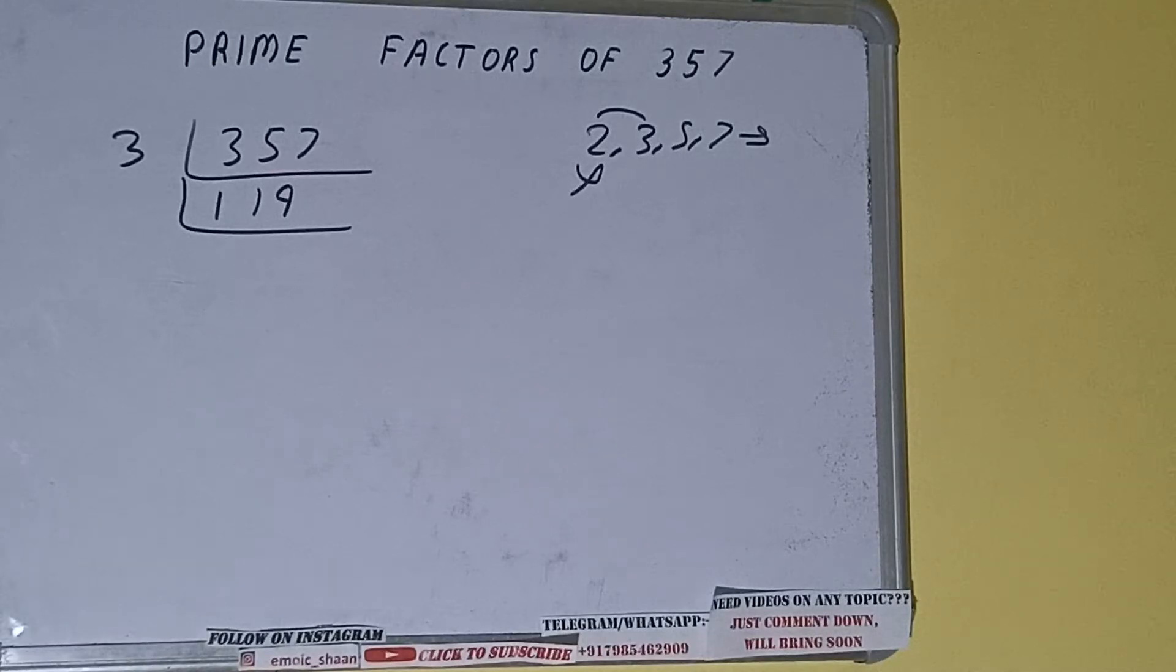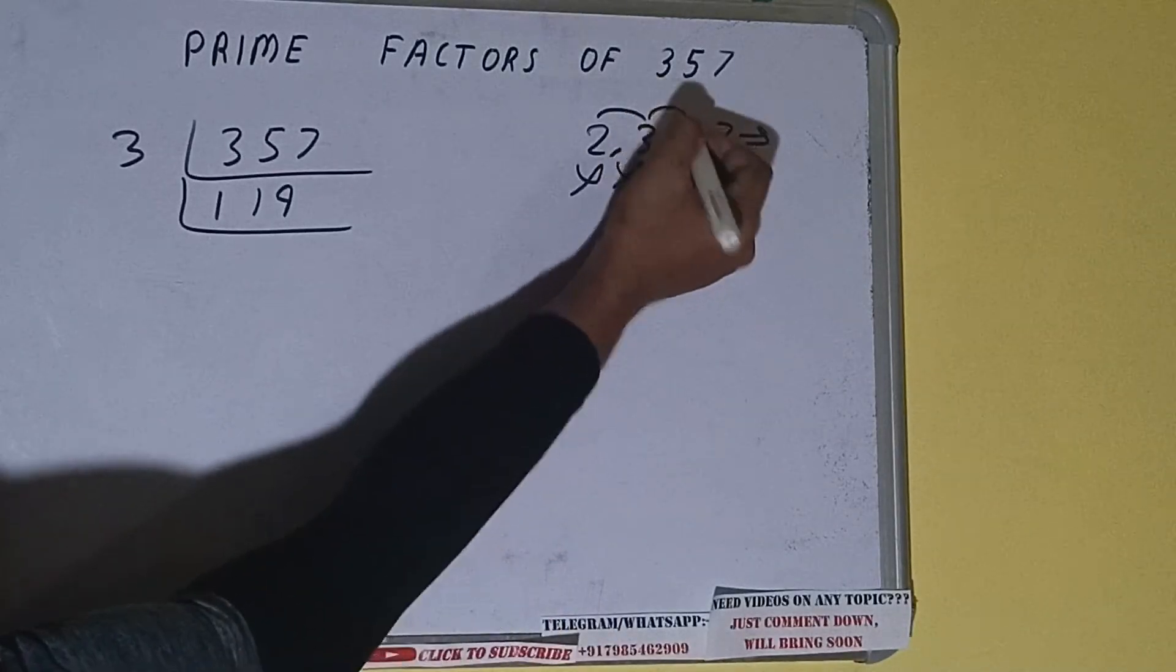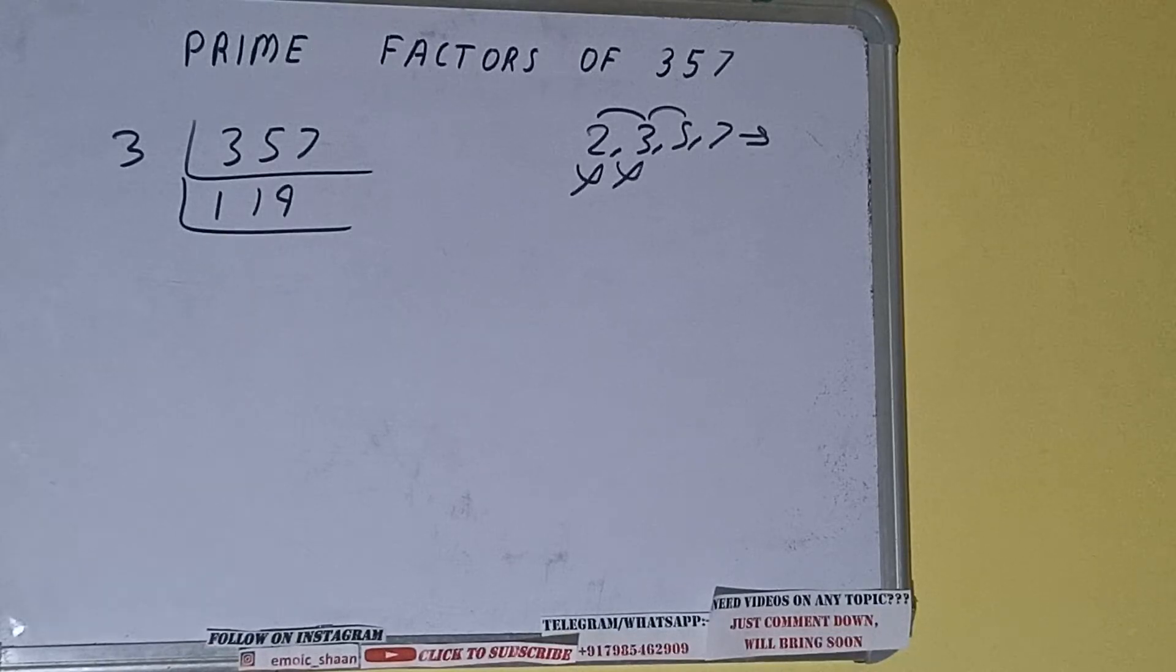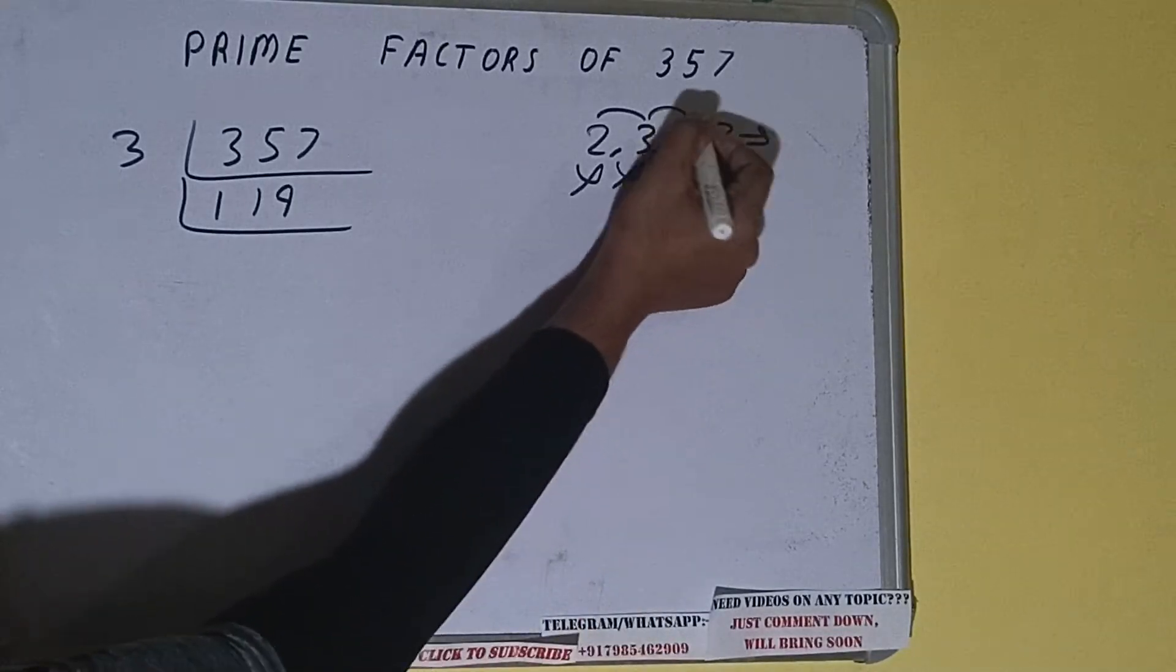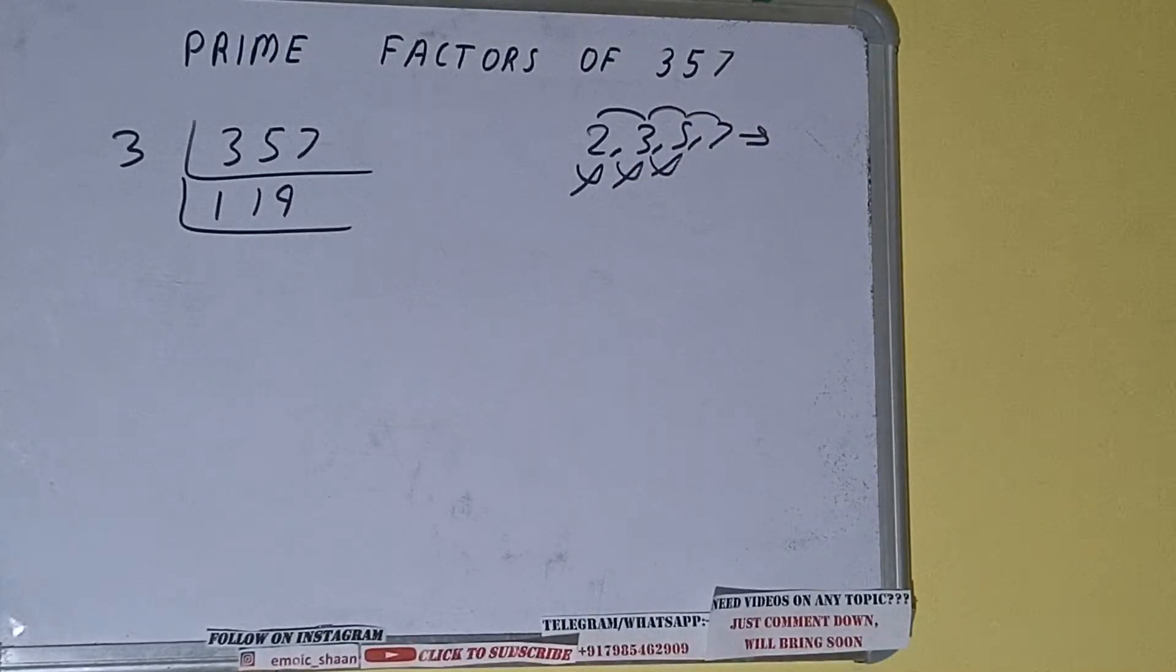So let's check with the next lowest prime number, that is 5. The last digit is neither 5 nor 0, so it is not divisible by 5. Let's check with 7.